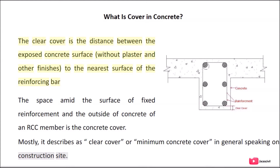The clear cover is the distance between the exposed concrete surface, without plaster and other finishes, to the nearest surface of the reinforcing bar. The space between the surface of fixed reinforcement and the outside of concrete of an RCC member is the concrete cover. It is described as clear cover or minimum concrete cover in general.